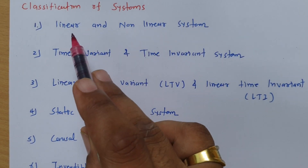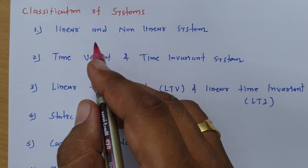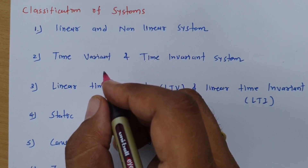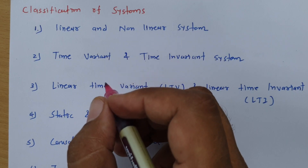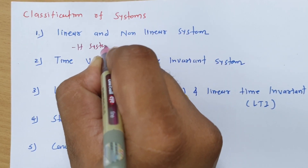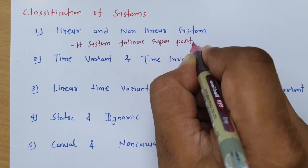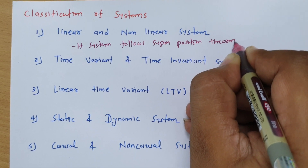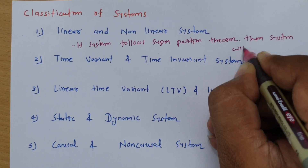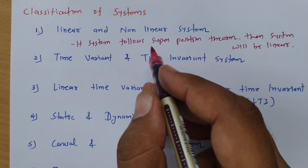The first category is linear and nonlinear systems. If a system follows the superposition theorem, then one can say the system is a linear system. I will explain those conditions in detail in the next few sessions, so stay tuned.